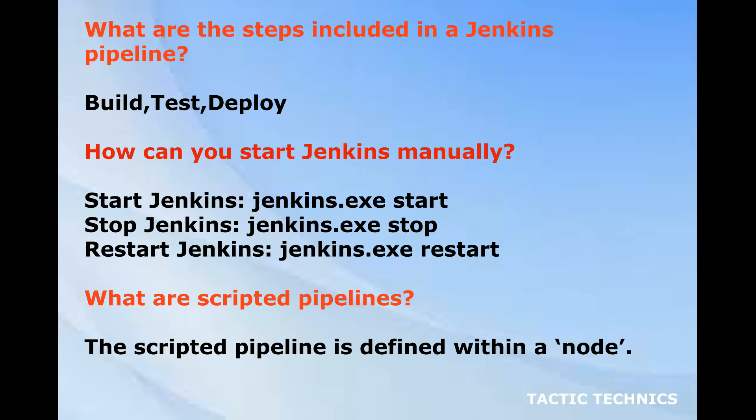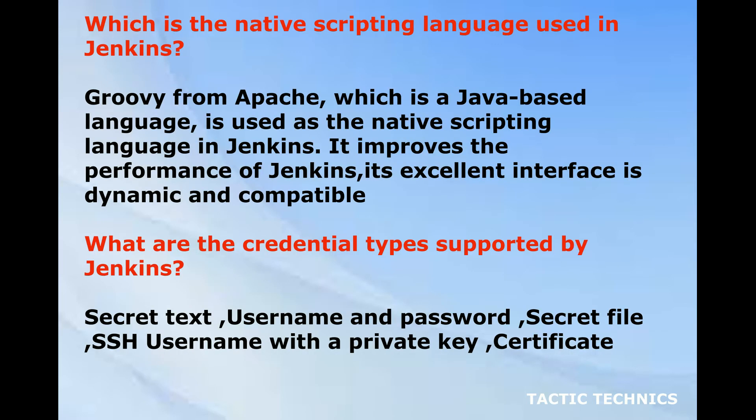What are scripted pipelines? The scripted pipeline is defined within a node. Which is the native scripting language used in Jenkins? Groovy from Apache, which is a Java-based language, is used as the native scripting language in Jenkins. It improves the performance of Jenkins — its interface is dynamic and compatible.